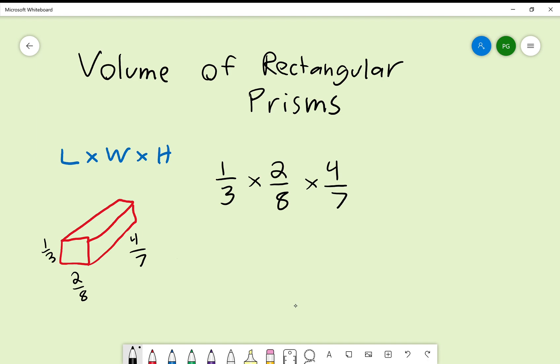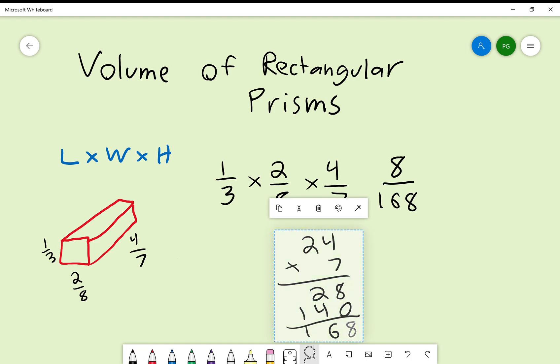One times two is two, times four is eight. Three times eight is twenty-four, times seven is—okay, that's going to be twenty-eight, this is fourteen—add them up, you get one hundred and sixty-eight. Voilà, my answer! Obviously I'm not having you simplify if you're doing this by hand, but my answer will be eight over one sixty-eight. It's not difficult—all you do is multiply length times width times height.